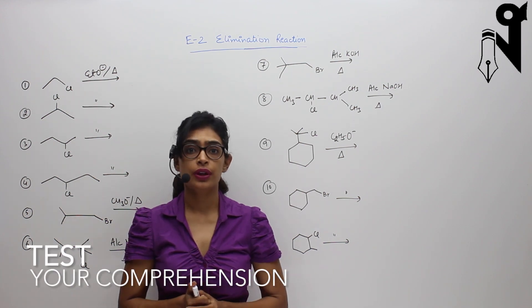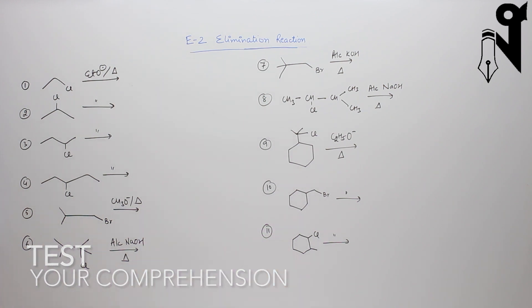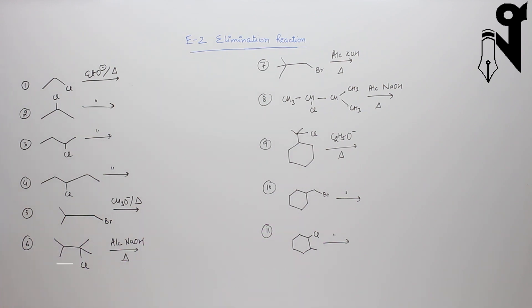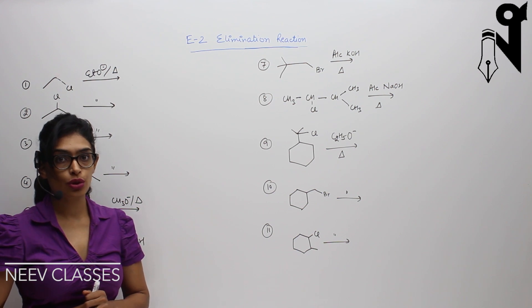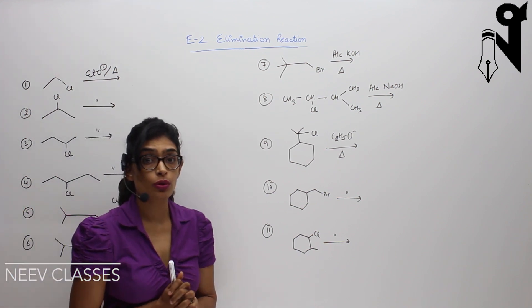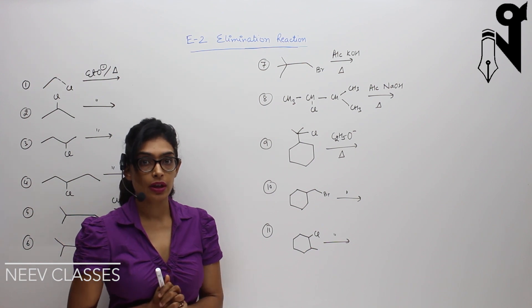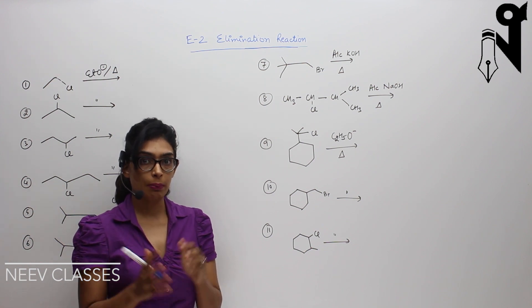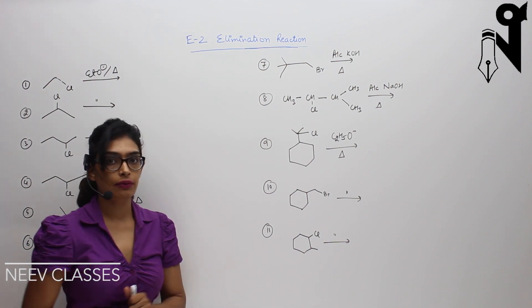I have written some questions here — try them out and then we will discuss. Now let's discuss the solutions. We already know that E2 follows Zaitsev's rule. Next, we have a big bulky base, so we will be applying all the concepts we have learned till now and solve these questions.